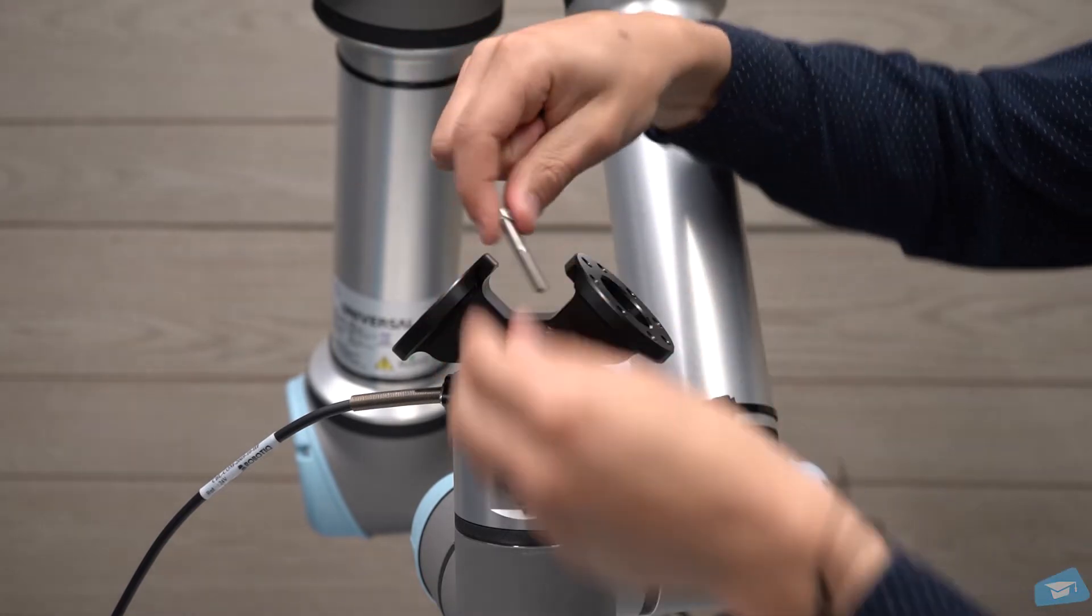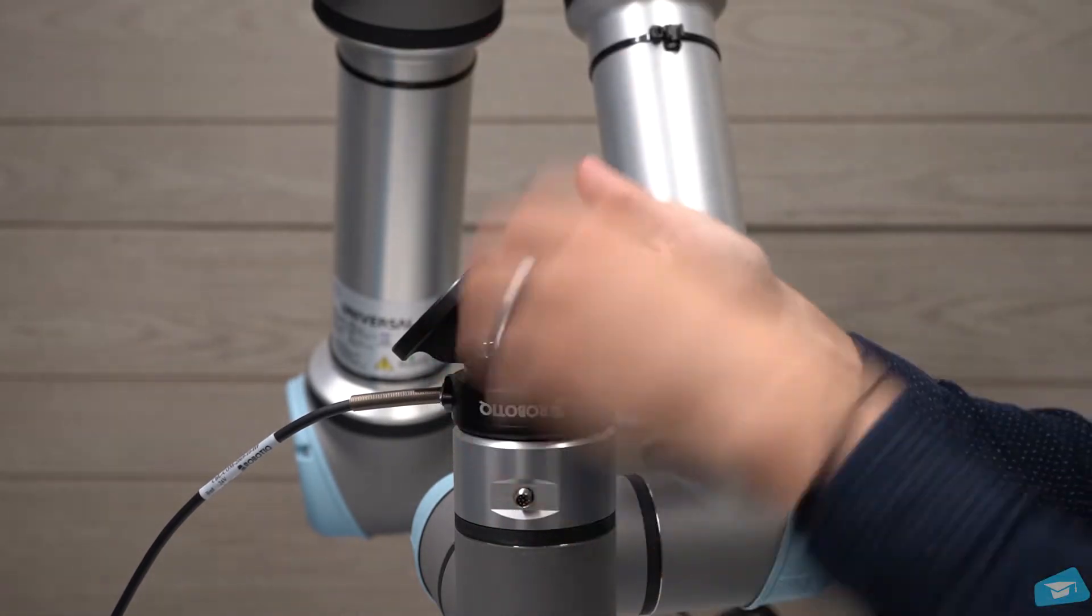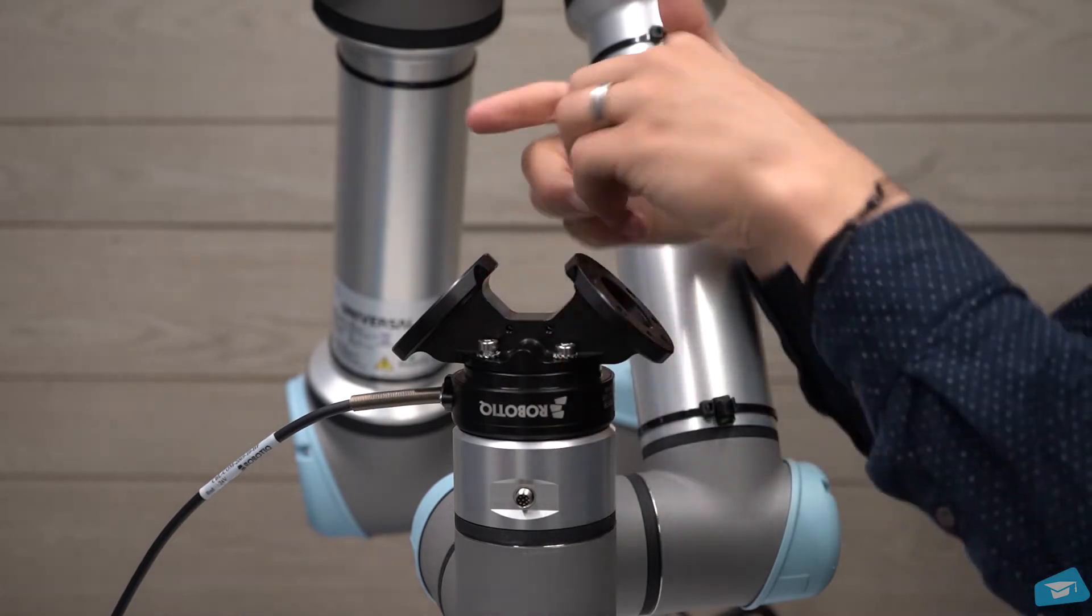Use the longer screws provided in the kit with the tool lock washer to secure the camera and the bracket together.